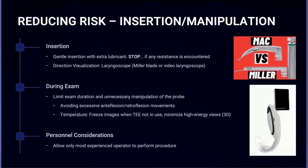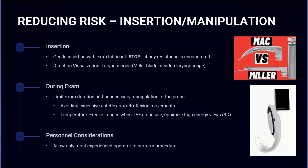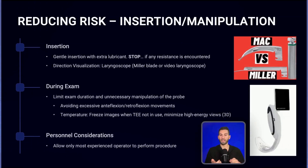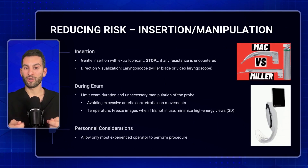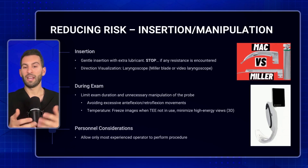During insertion, use extra lubricant — it's simple and reduces the risk of the probe catching on something it might normally slip through. Also, stop if resistance is encountered. If you've tried two or three times and keep encountering resistance, get extra help. If you're still having trouble passing the probe past the upper esophageal sphincter, use direct visualization with a laryngoscope — either a long Miller blade or a video laryngoscope.